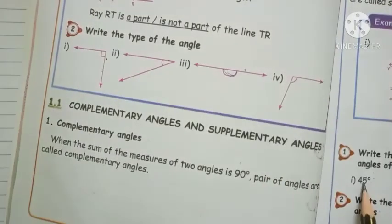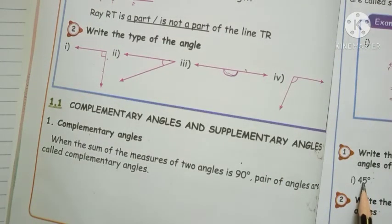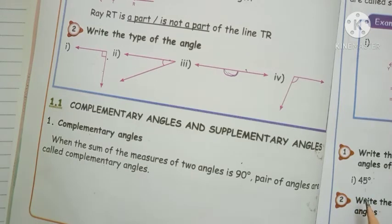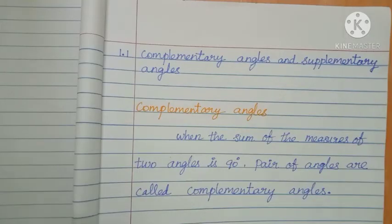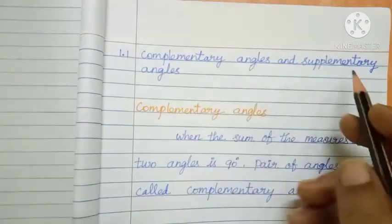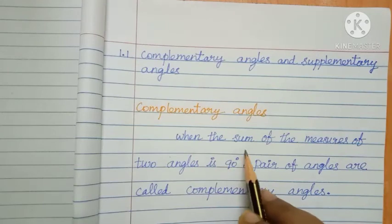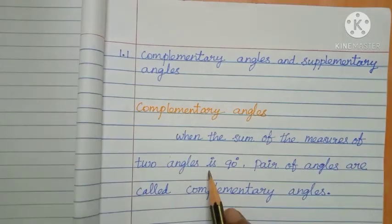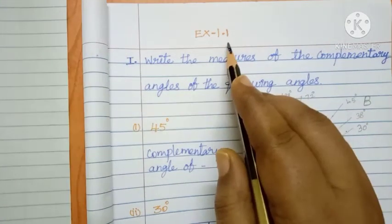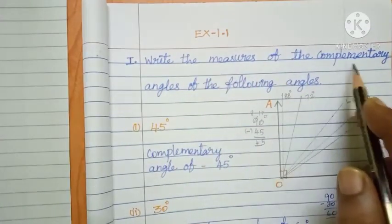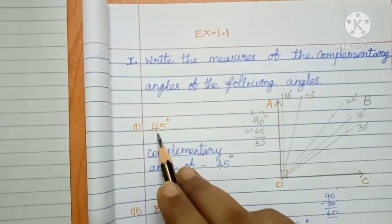For forty five degrees: to find its complementary angle, calculate ninety minus forty five. Two numbers add to get ninety — one number is forty five, and you find the other. Do the subtraction and get the answer. Write the definition in classwork: complementary angle — when the sum of the measures of two angles is ninety, the pair of angles is called a complementary angle. First: forty five degree angle.